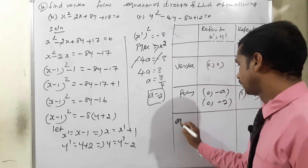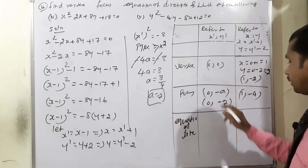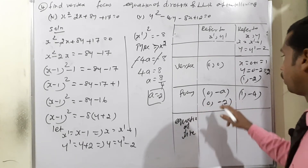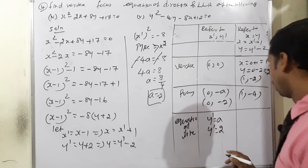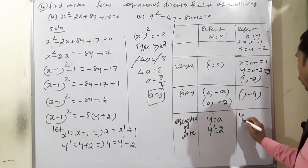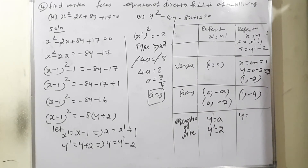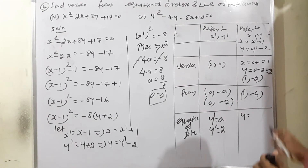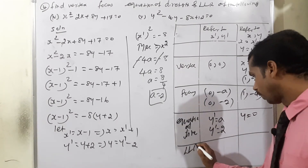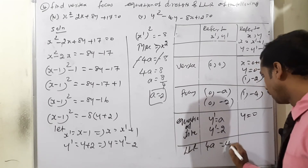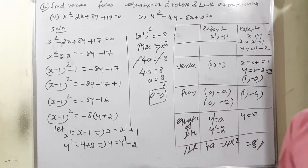Equation of directrix: y is dependent; opposite sign gives y' = +a = 2. Converting: y = y' - 2 = 2 - 2 = 0. So equation of directrix is y = 0. Length of latus rectum = 4a = 4 × 2 = 8. Subdivision four is complete.